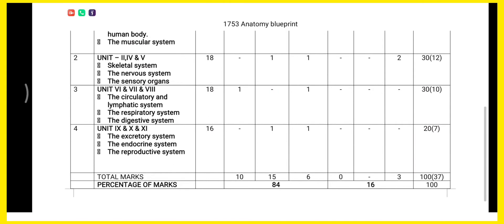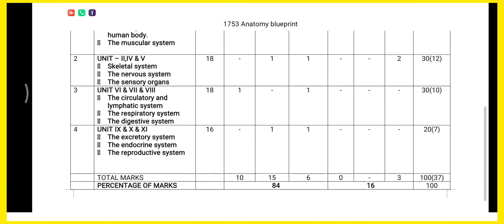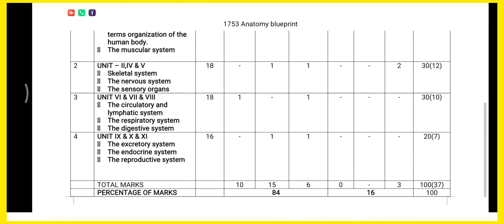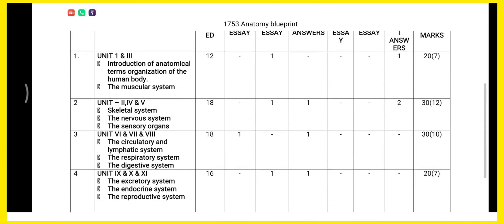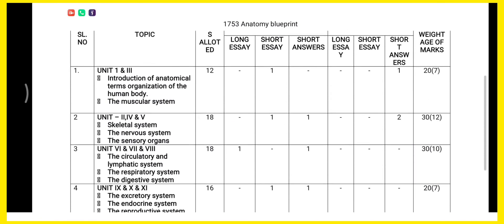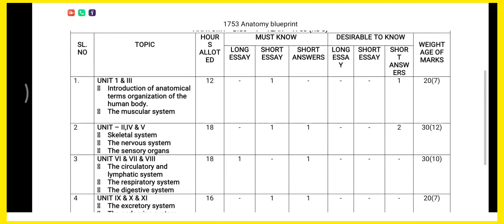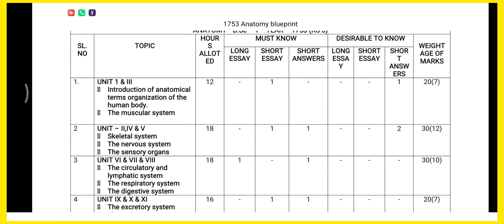Out of 37 marks, you have to score in the anatomy subject. It is only for 37 marks, and physiology will come for maybe 38 marks — both together consisting of 75 marks that you have to attend in the paper.